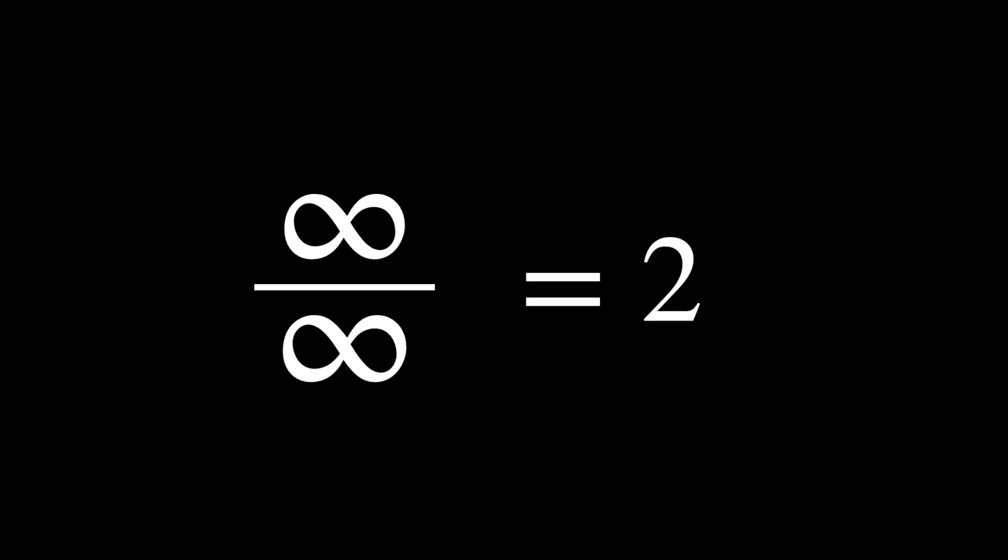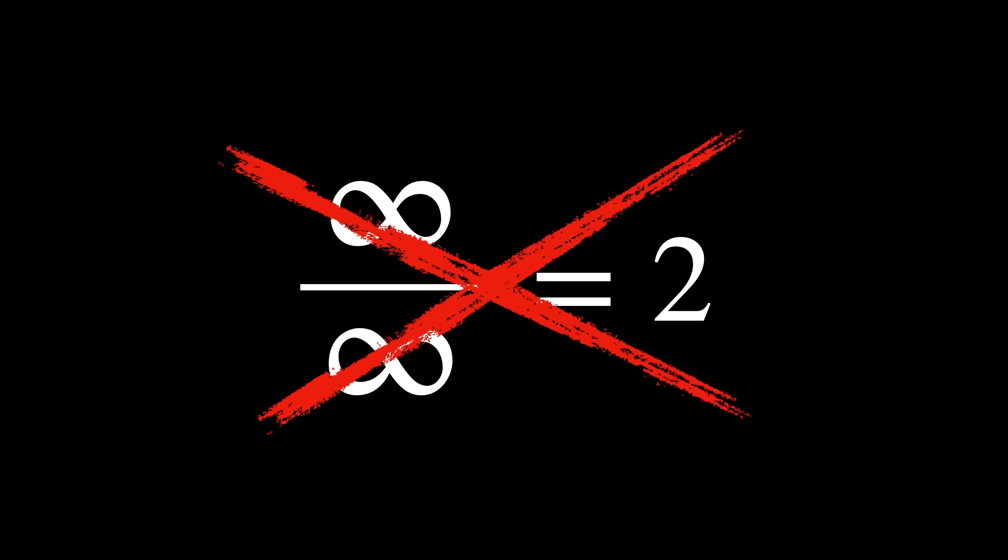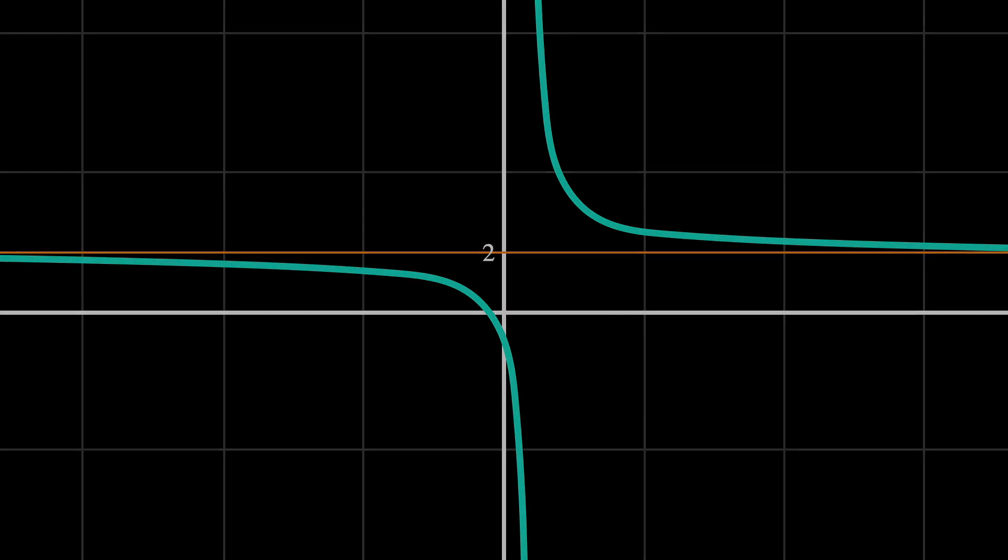One might say that infinity over infinity is the same as two, but obviously that's absurd. So through the second calculation, despite x tending towards infinity, we found that it will not surpass two, so two is the limit.